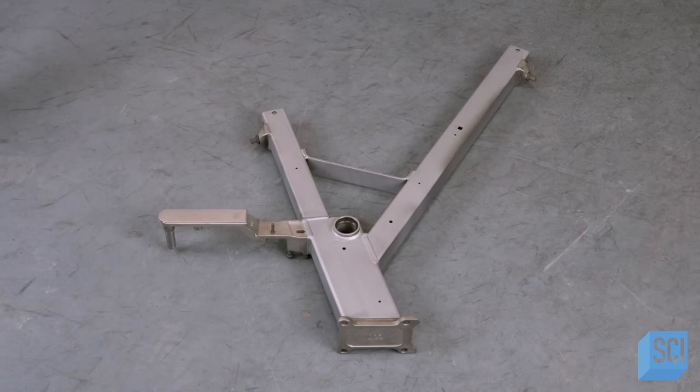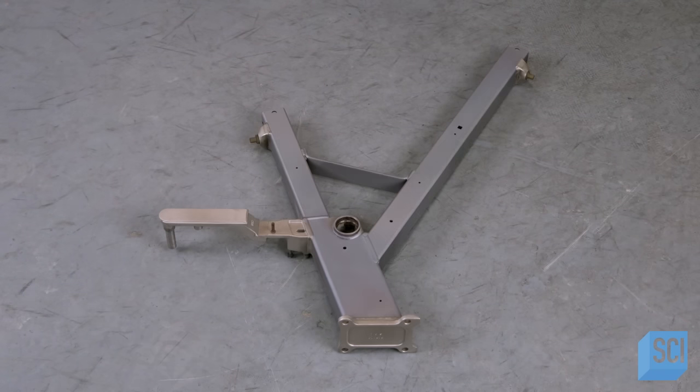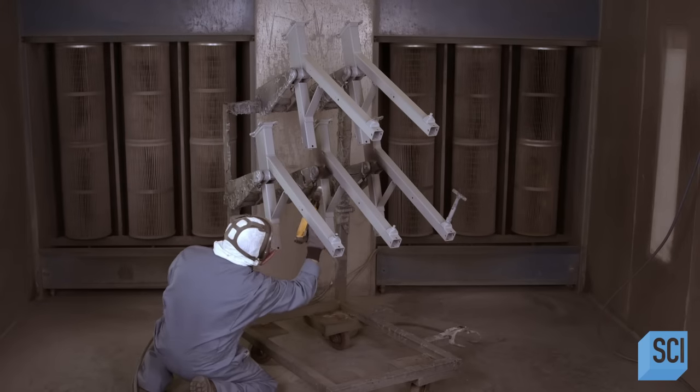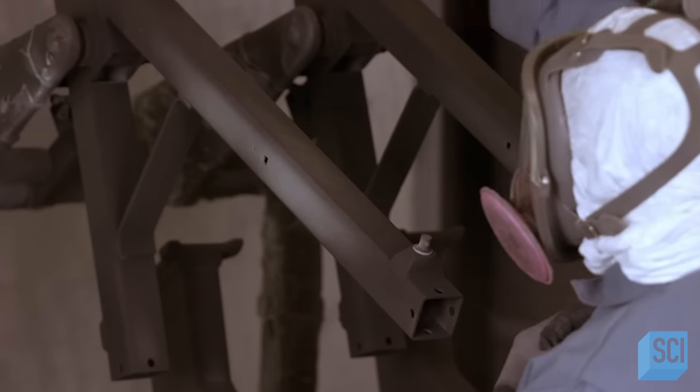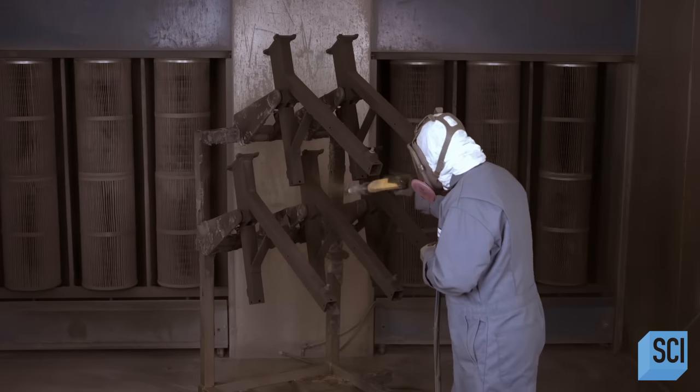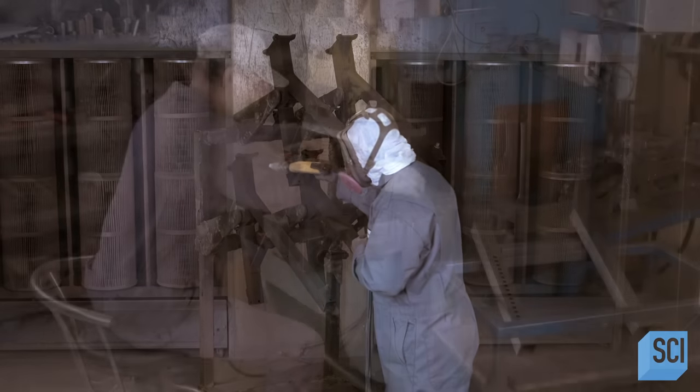Workers sandblast the metal, wash it, and apply primer. After grounding the mainframe, another worker sprays electrostatically charged resin and pigment onto it. Once it's baked on, this powder coat will provide a protective finish.